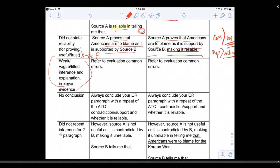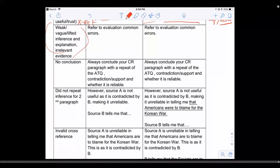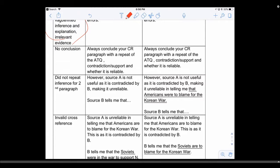Number four: no conclusion. When you cross-ref or when you talk about the motive, always conclude at the end by repeating the contradiction or the support or the motive, and telling me whether it's reliable or not. Hence it proves, or hence I can trust it. Always go back to the question.